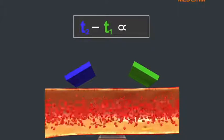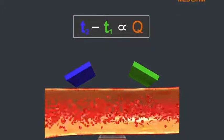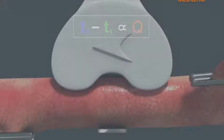The difference in transit time is recorded by the system and is directly proportional to the amount of blood flowing through the measurement area.